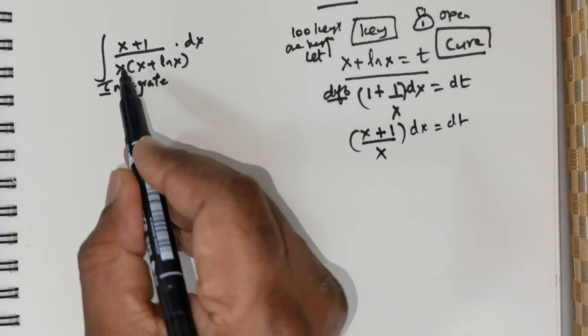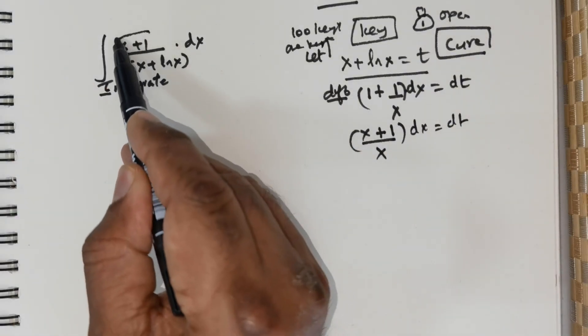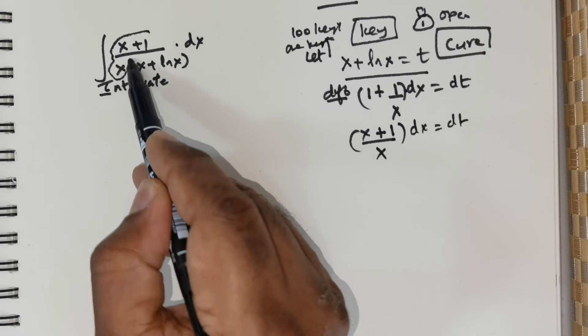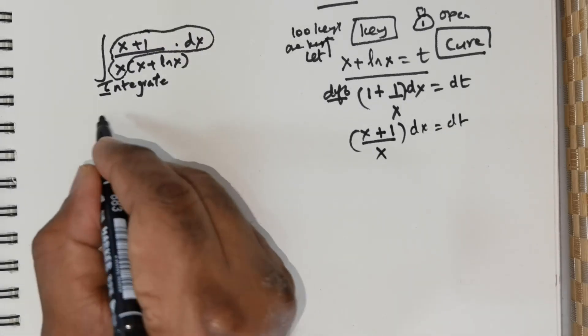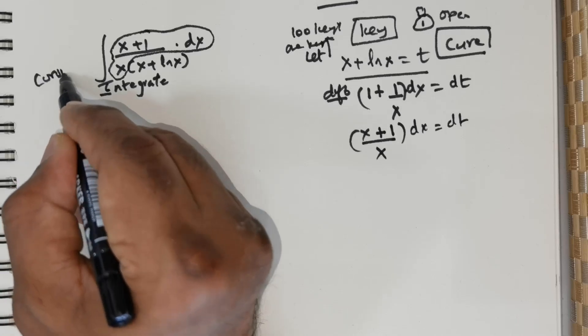Now clearly you can see, if you were to observe the problem, you see that (x + 1/x)dx is already present there.